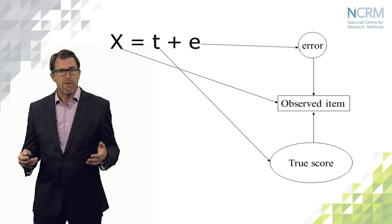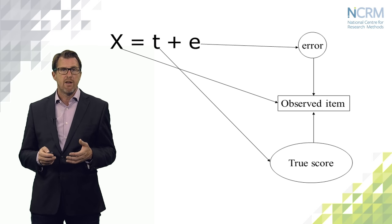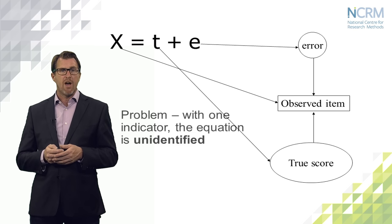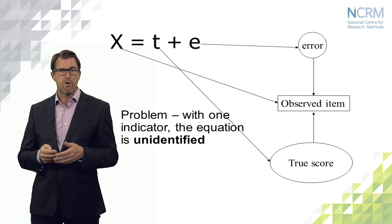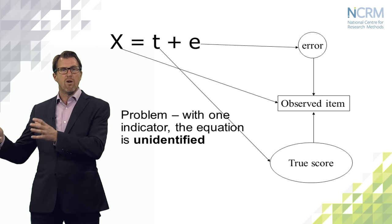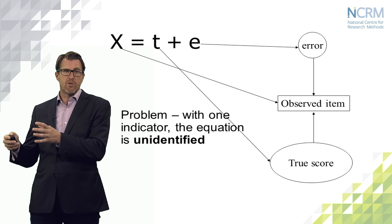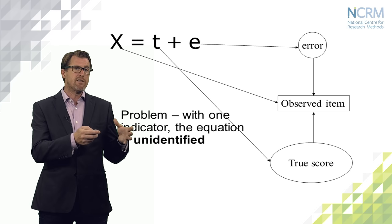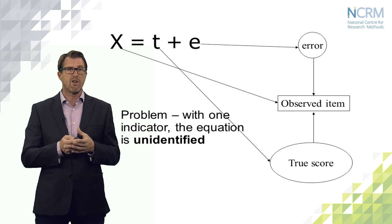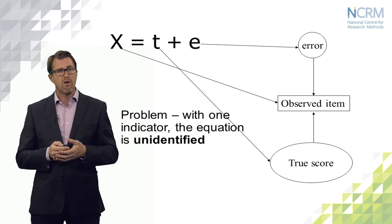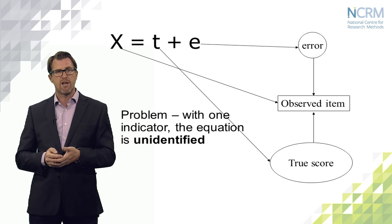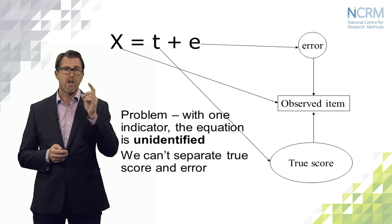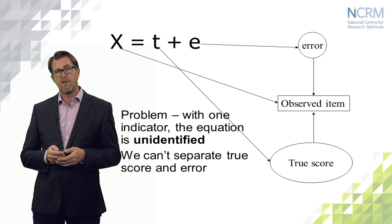It would be nice if we could implement this as a statistical model. Unfortunately, when we only have one indicator of the latent variable, this equation is what we would call unidentified. We have more unknown quantities — t and e — than known pieces of information, which is just x. We have two unknowns and one known, so we can't solve that equation uniquely. We can't separate the true score from the error when we only have one measure of the underlying concept. This tells us that we need to have multiple indicators of our latent constructs, so that we can over-identify the true score equation and estimate t and e for each indicator.